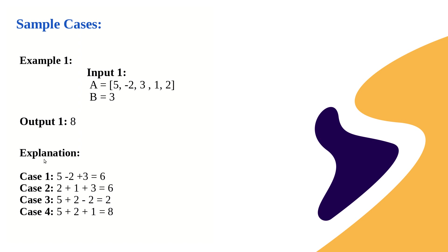Let's look at the various possible cases. Case 1: pick all 3 elements from the leftmost end — 5 + (-2) + 3 = 6. Case 2: pick from the right end — 2 + 1 + 3 = 6.